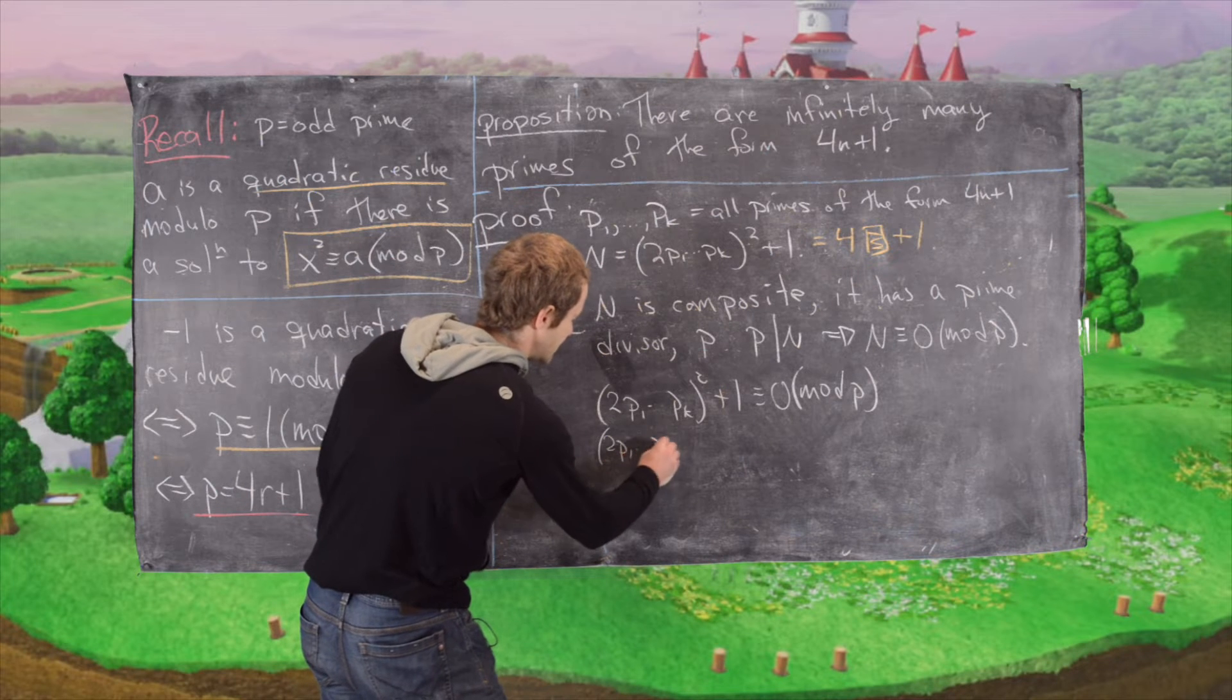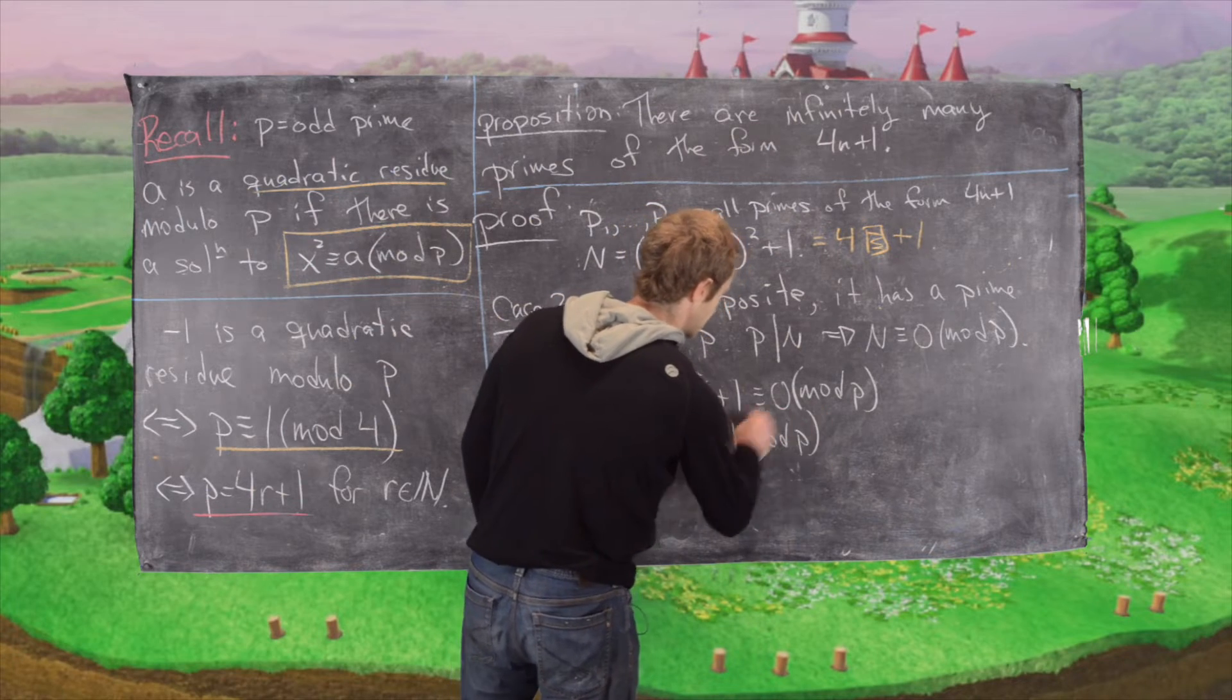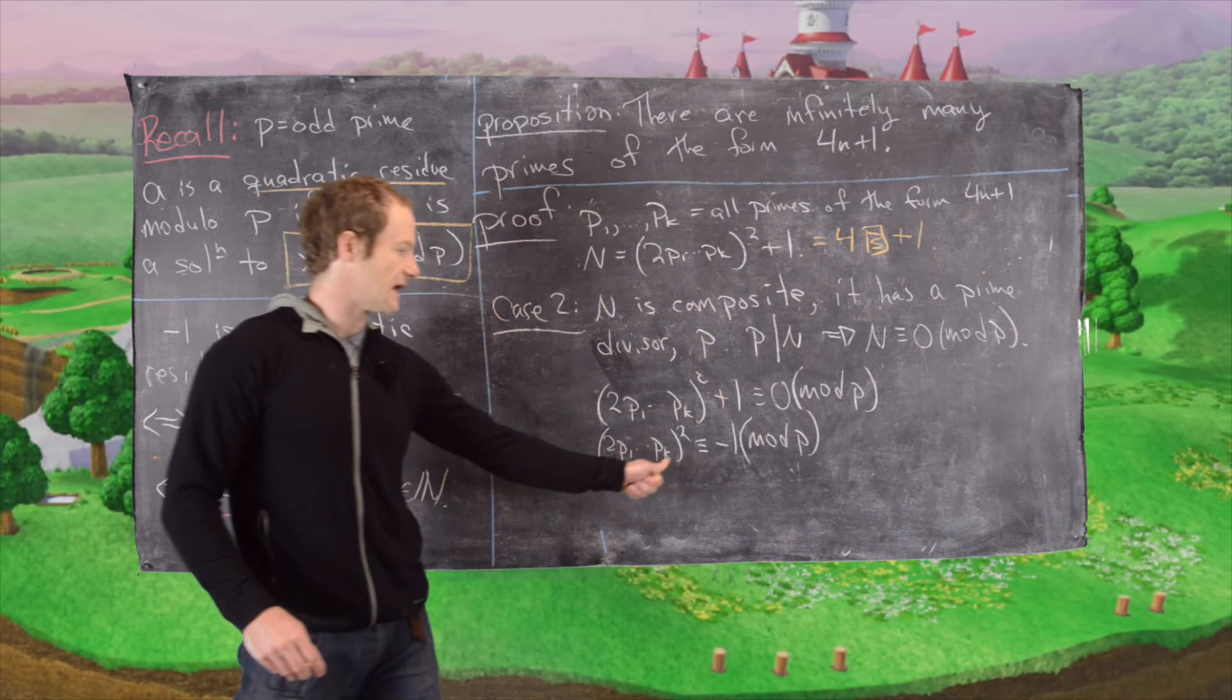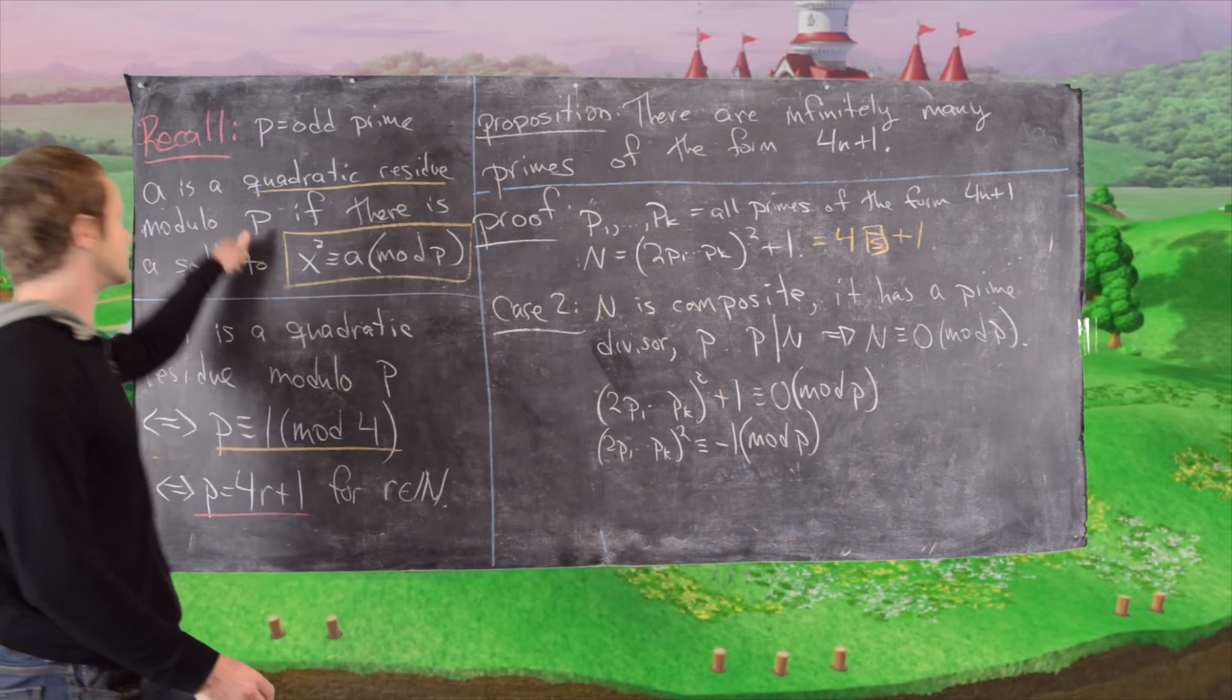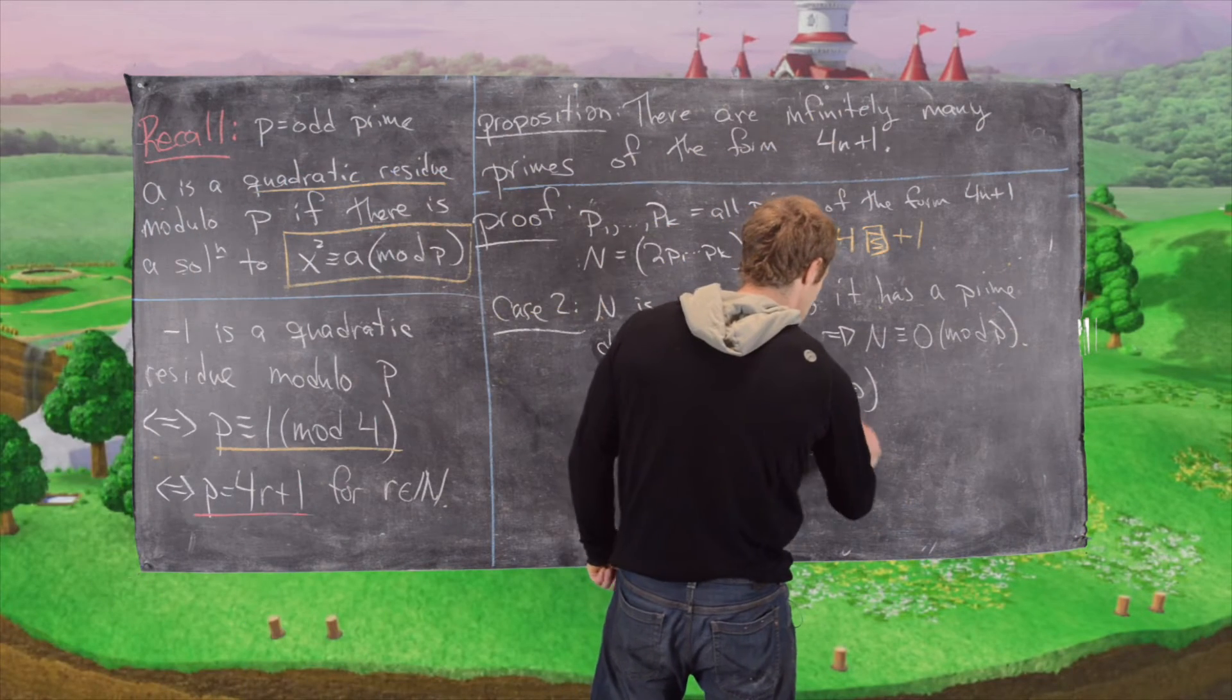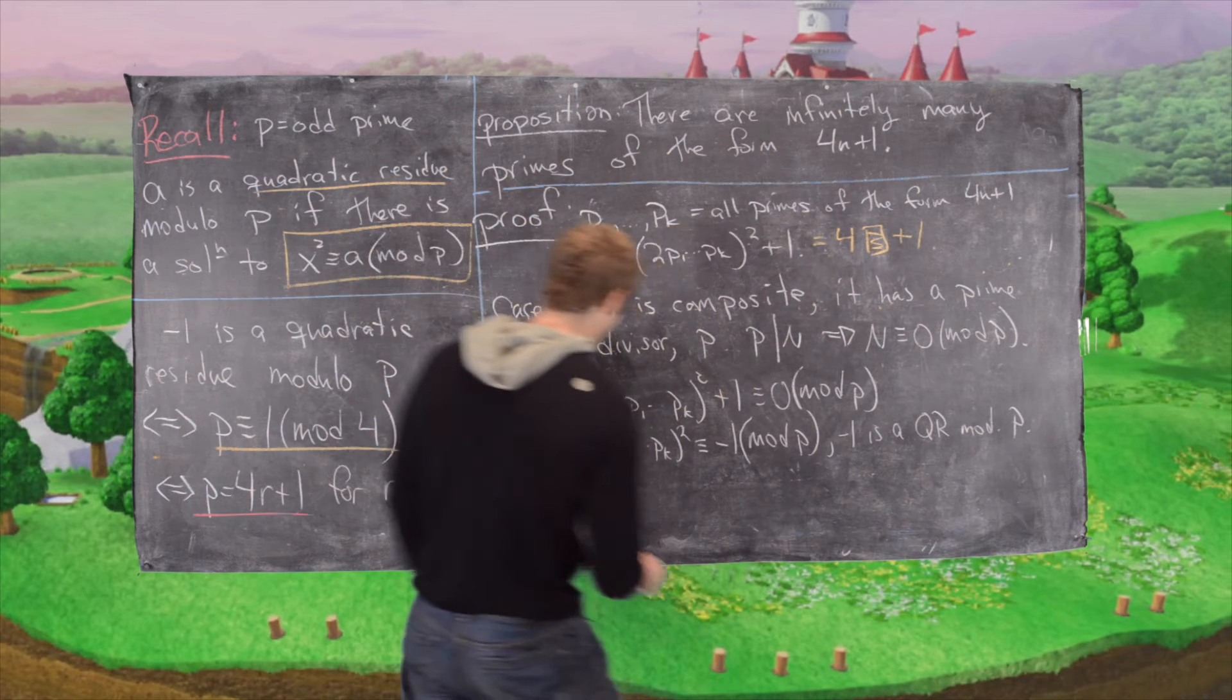But now notice that tells us that 2p1 up to pk squared is congruent to negative 1 mod p. Notice we have negative 1 is a square mod p. In other words, negative 1 is a quadratic residue mod p, which tells us that p is of the form 4r plus 1.